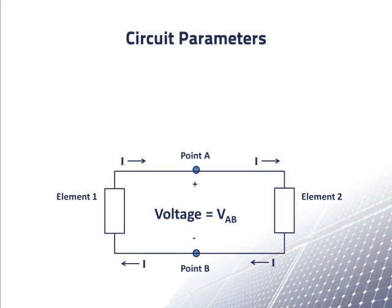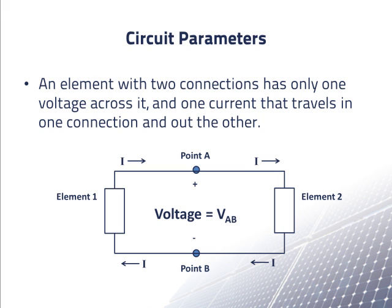All of the voltage-current relationships of all of the elements must be satisfied at the same time. We call figuring out the voltages and currents that satisfy all of these requirements solving the circuit. Fortunately, for an element with only two connections, there is only one voltage and one current to worry about.